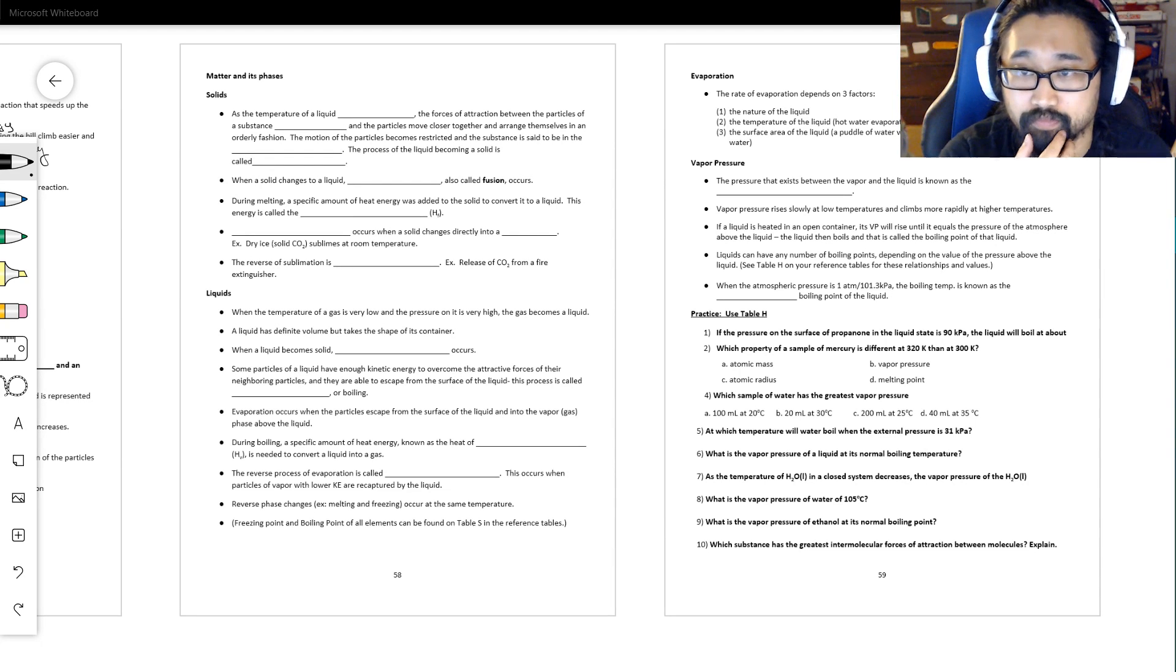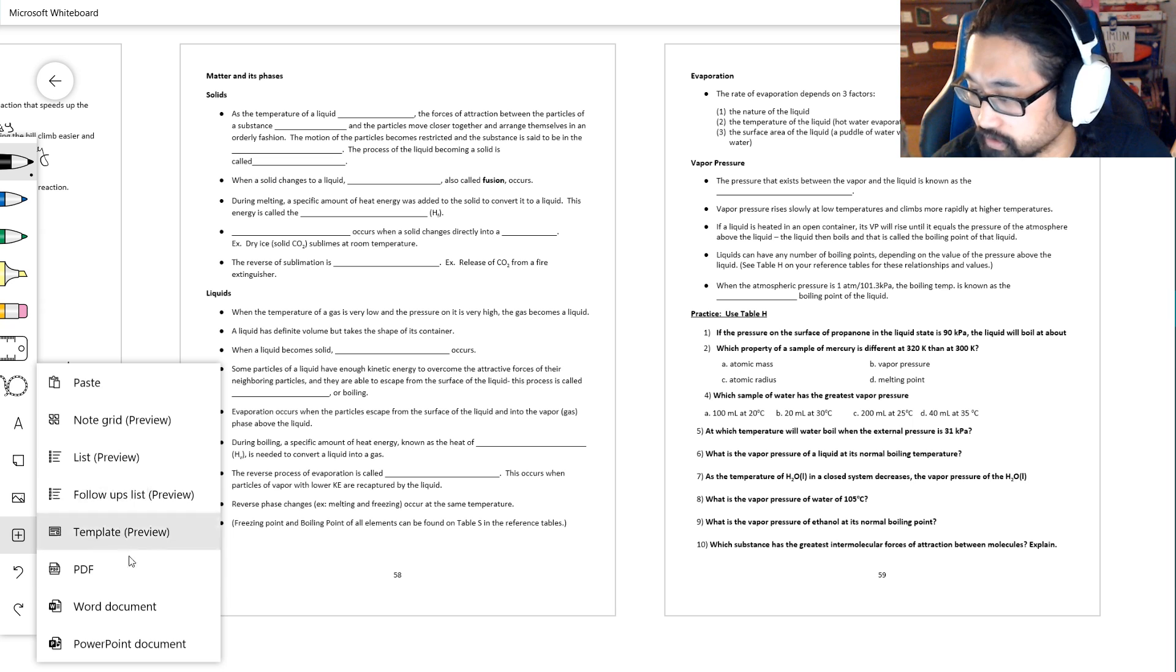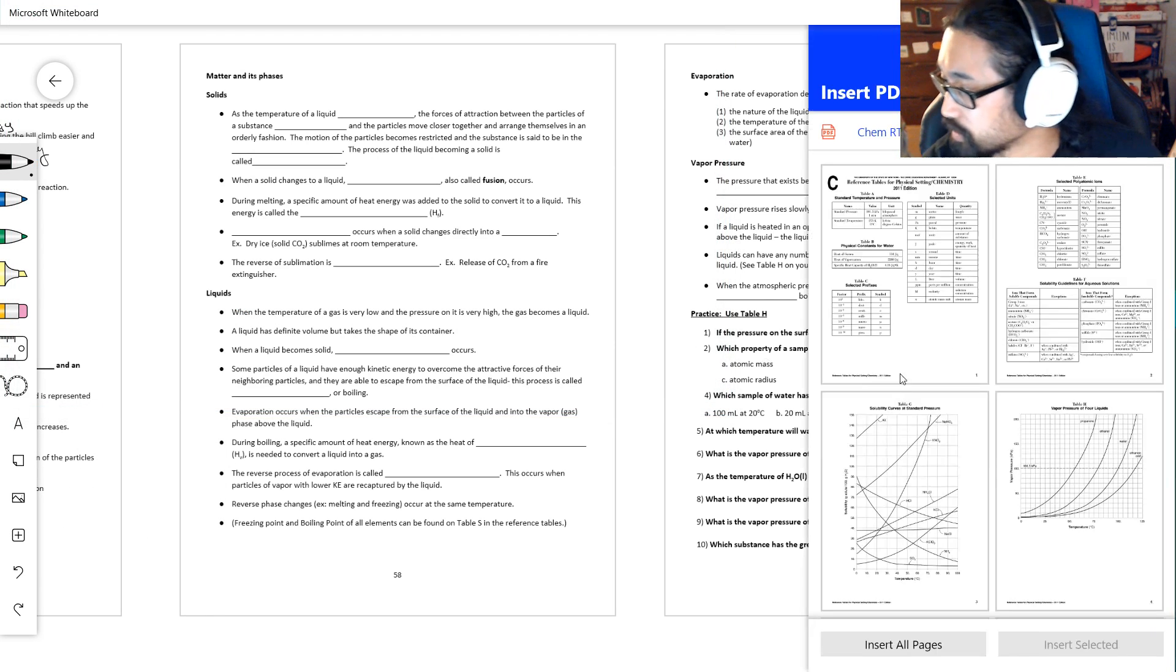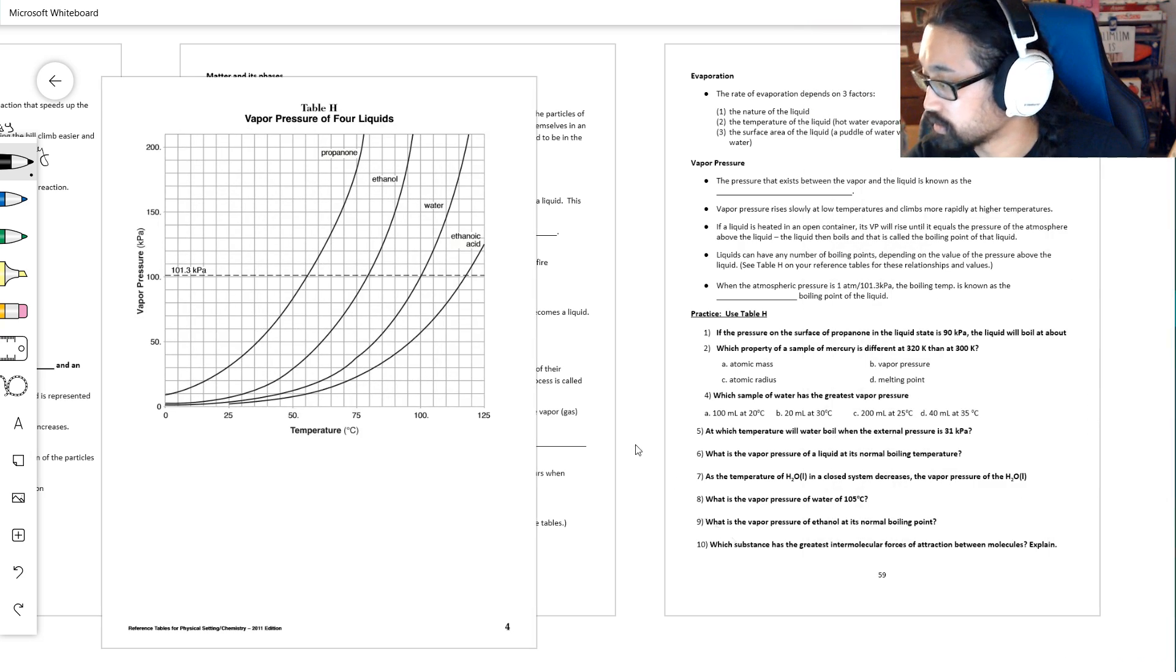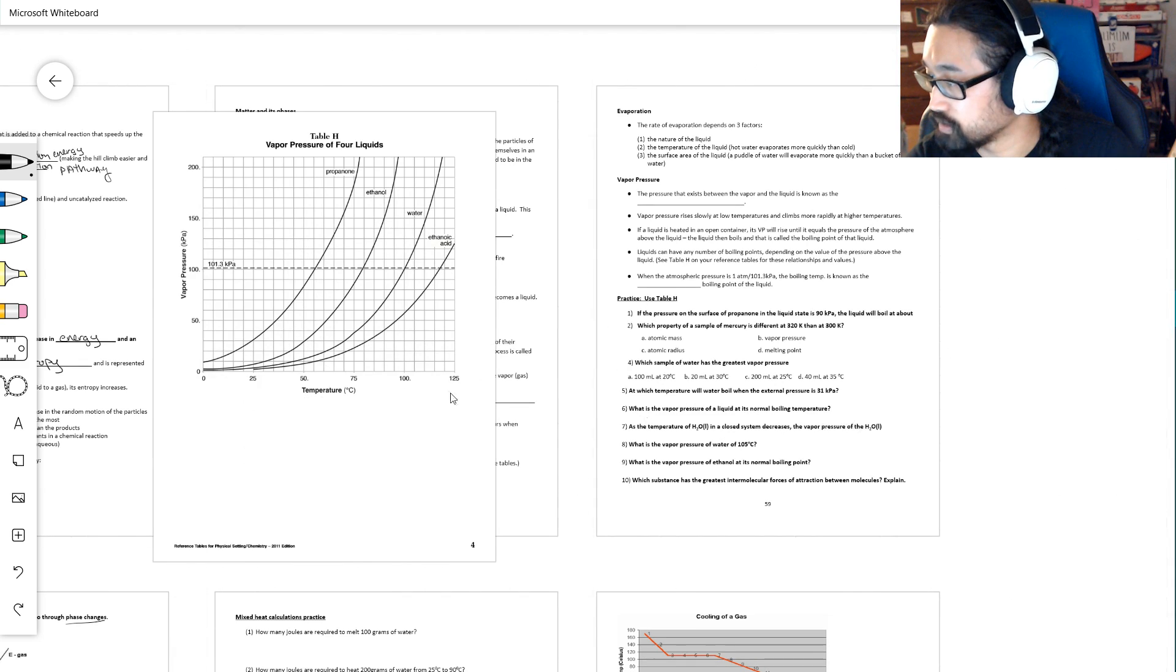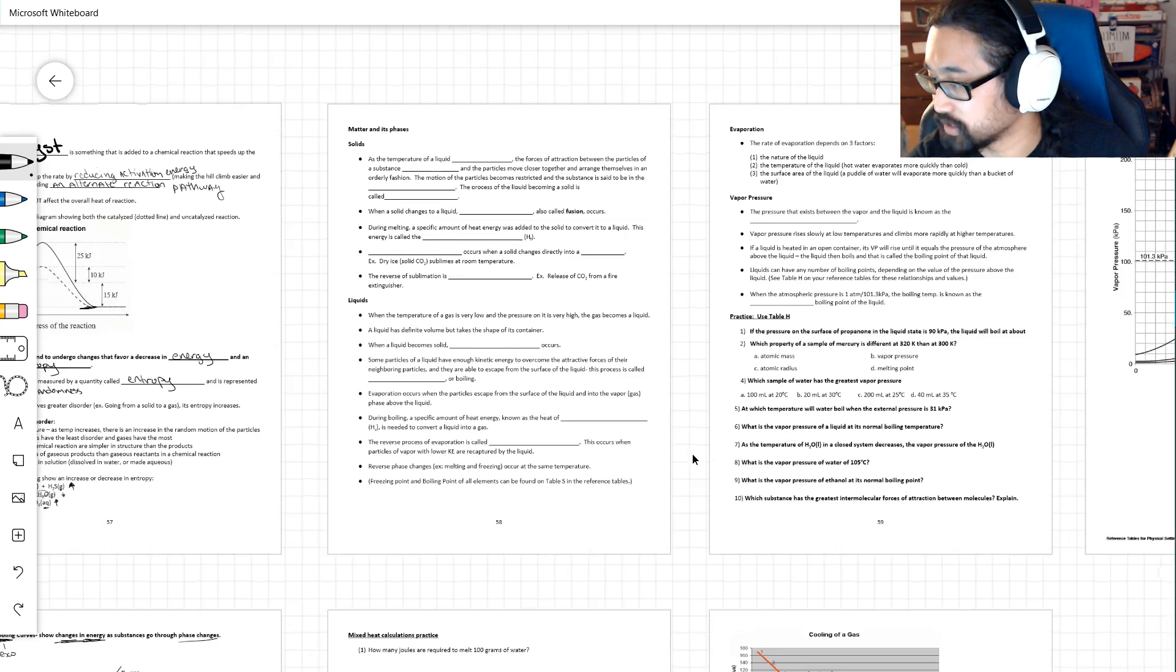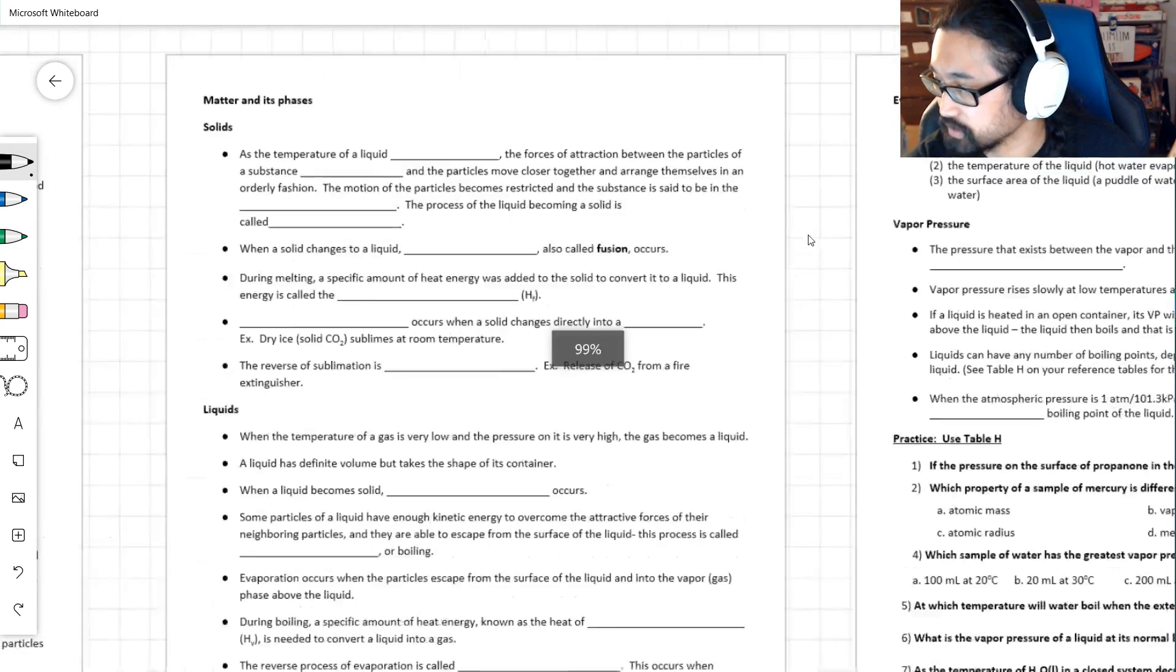Alright chemistry, here we go. I said I was going to finish out pages 58 and 59, so here we are. Most of it is review, some of it you'll need a new part of your reference table for, which we'll talk about. Let me make sure I have that page of the chem reference table. We need Table H. We'll need that when we get to page 59, but let's start on page 58.